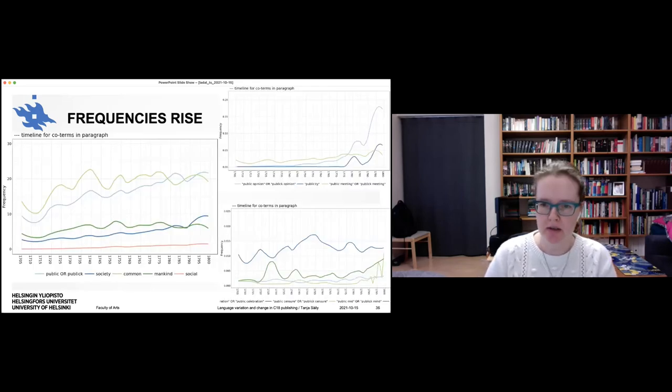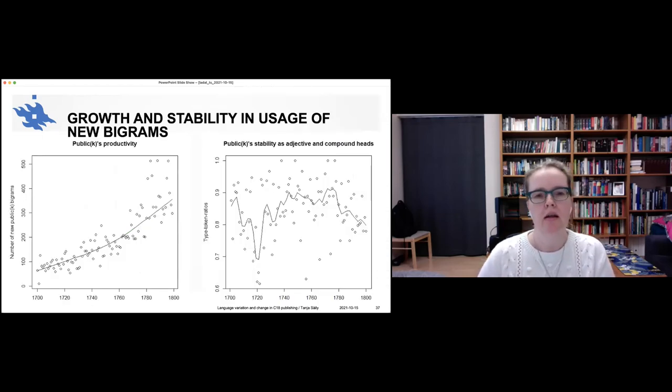So first of all, we can see that the frequency of the word public rises. So it's the light blue one in this graph, for example. So it kind of more than doubles during the 18th century. But maybe more interestingly, public words like sort of combinations like public opinion or public mind also increase in frequency and especially towards the end of the 18th century. So here we have public opinion kind of rising quite sharply. And then there's the public mind over here, which is an interesting kind of personification of public. And there is also growth, also stability in the usage of new public bigrams. So public something. So here we have the number of new public bigrams over time and it seems to increase. But then also we have some stability. So when the new words come, they kind of, they don't go out of use, but they stay in use to some extent. So they stabilize.